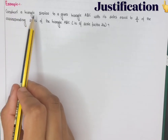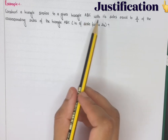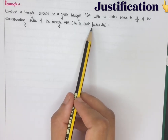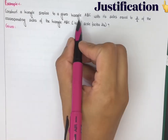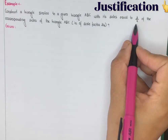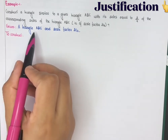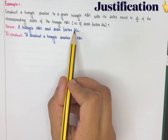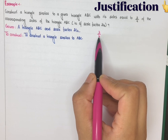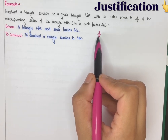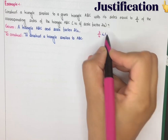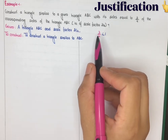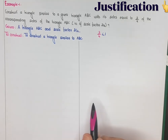Example 1: Construct a triangle similar to a given triangle ABC with its sides equal to 3/4 of the corresponding sides of triangle ABC — that is, scale factor 3/4. Given triangle ABC and scale factor 3/4, the denominator is the larger number, so dividing gives a value less than 1. That means the scale factor is less than 1. In this type of question, first check whether the scale factor is less than 1 or greater than 1.